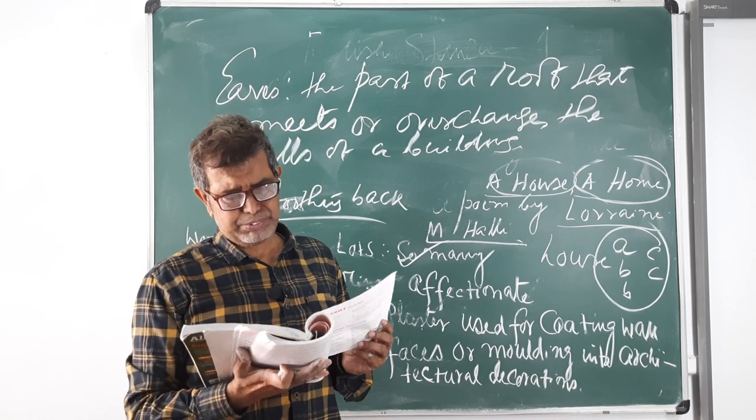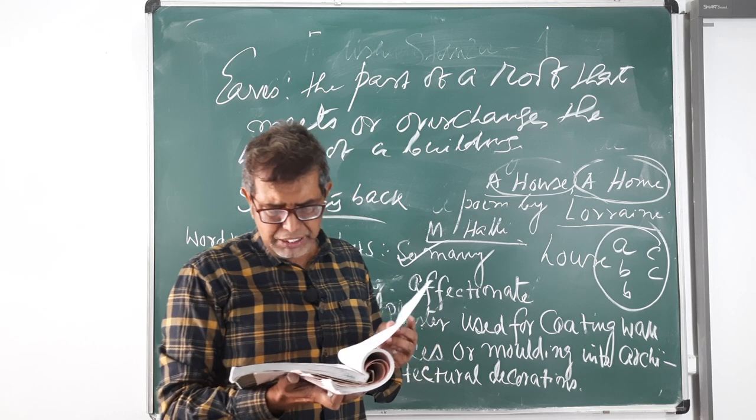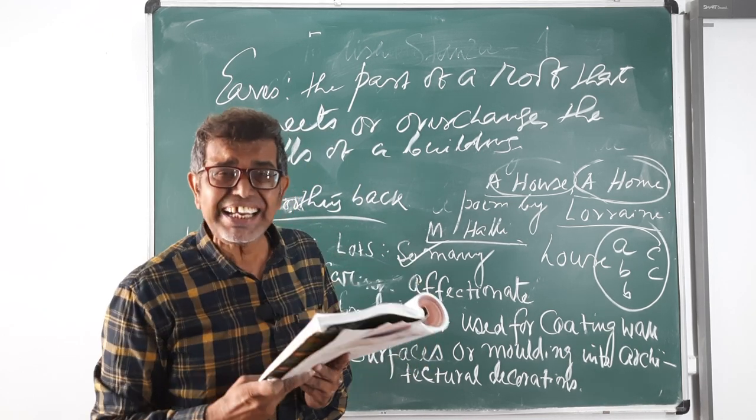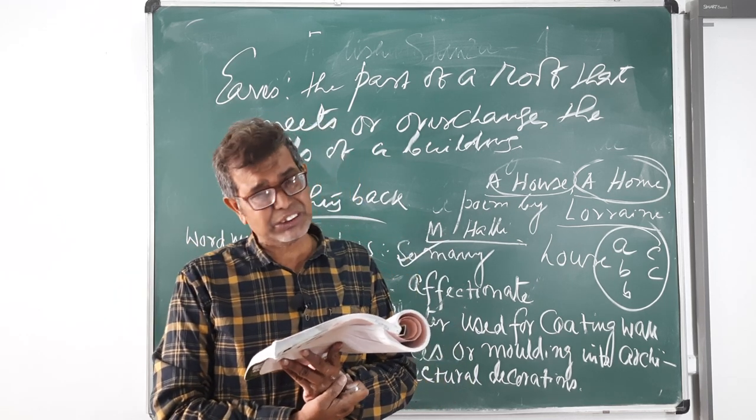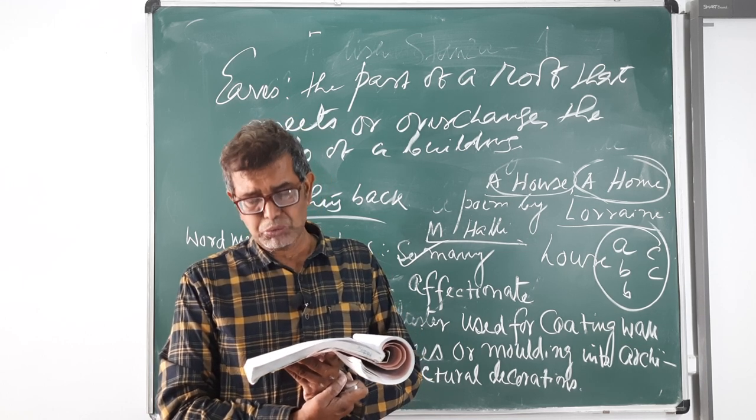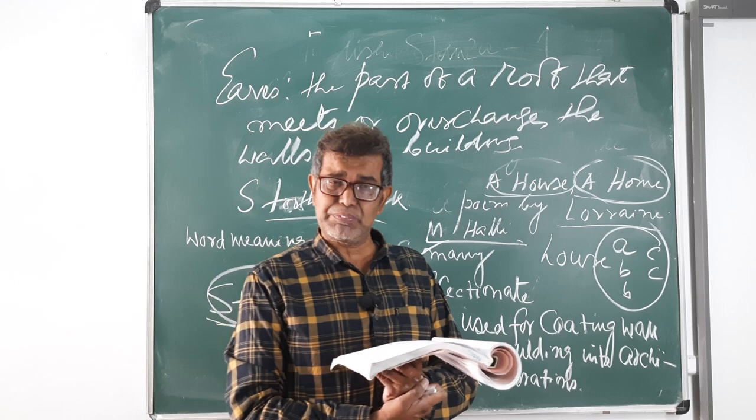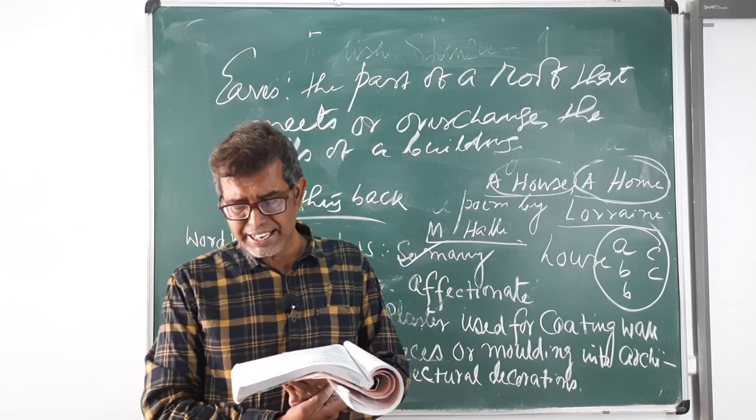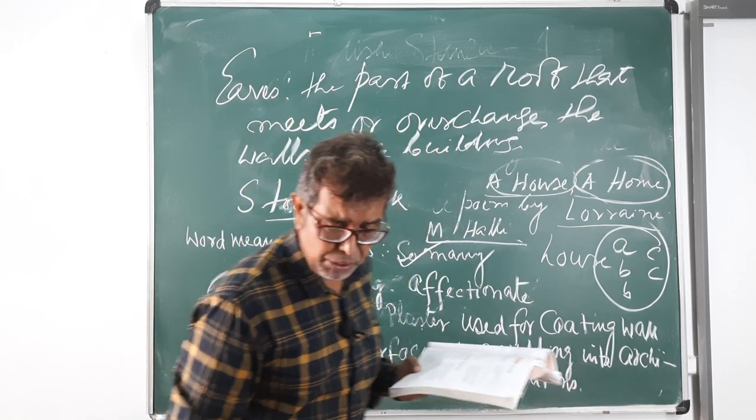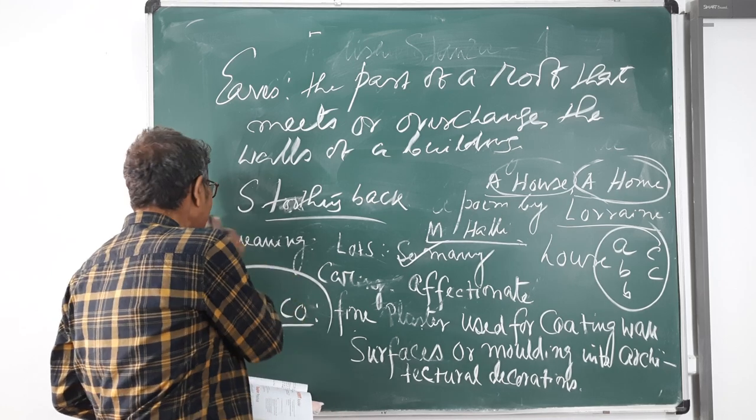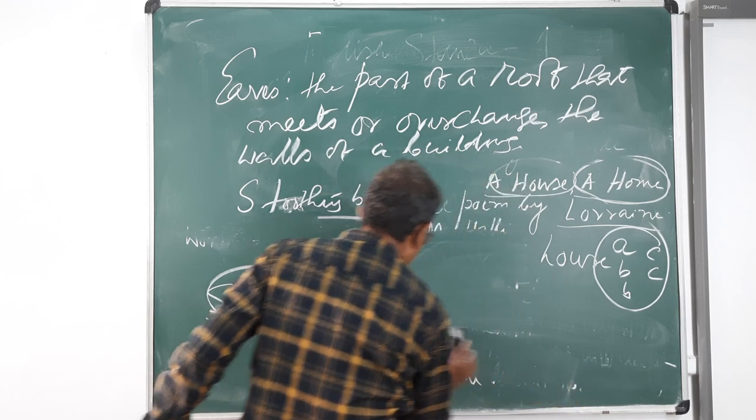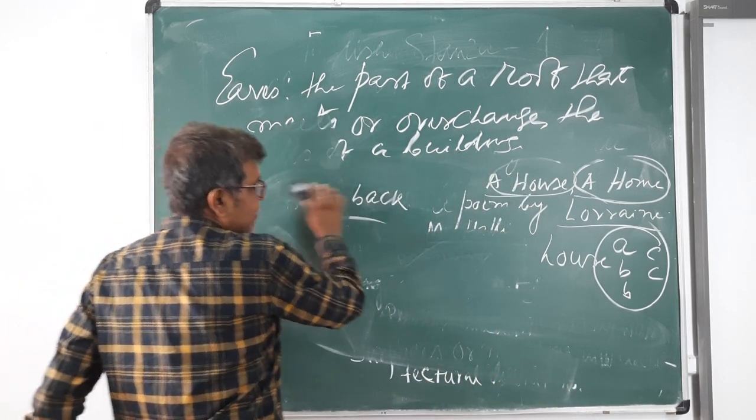Besides your chapter-wise questions which are already there, just you note down some of the questions. One value-based question just I would like to give you. Family plays an important role in a home. Explain with reference to the context of the poem A House, A Home. This is an assignment meant for you.